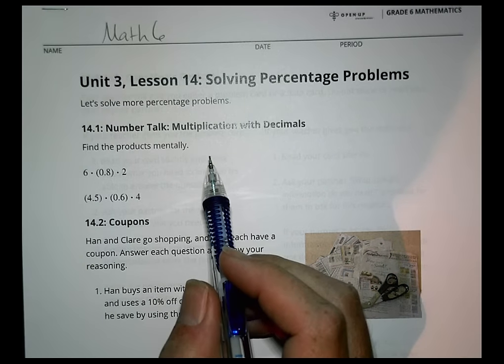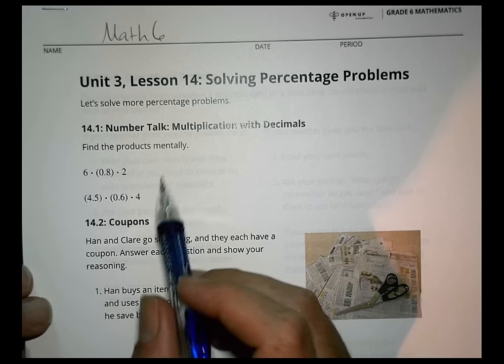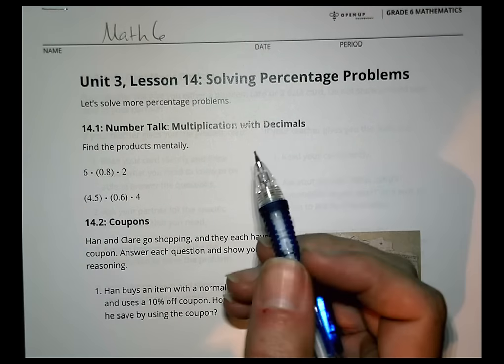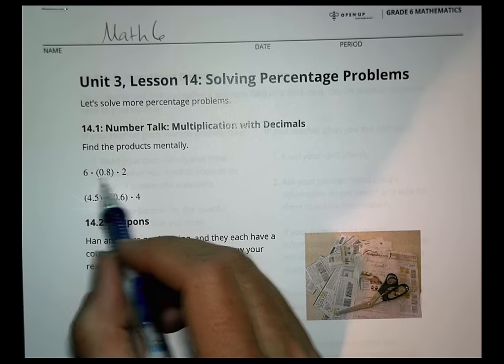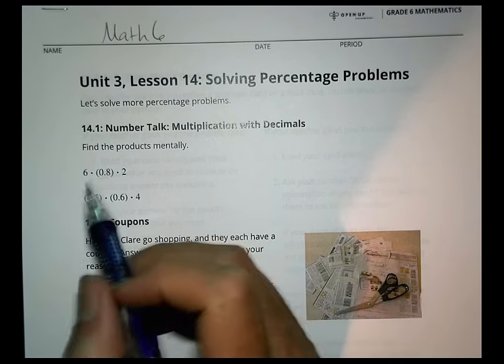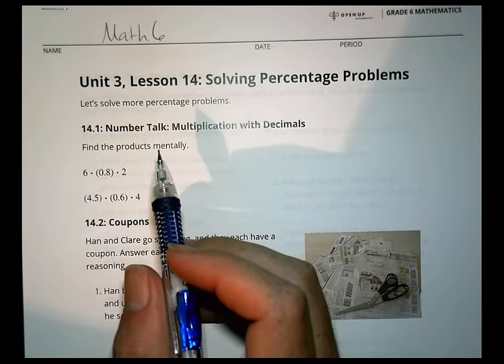Begin first of all with a little number talk, multiplication with decimals, and I want you to find the products mentally. When we take a look at something like this, what do you notice first of all? Is your eye drawn towards the 8 tenths or is it to the whole numbers?